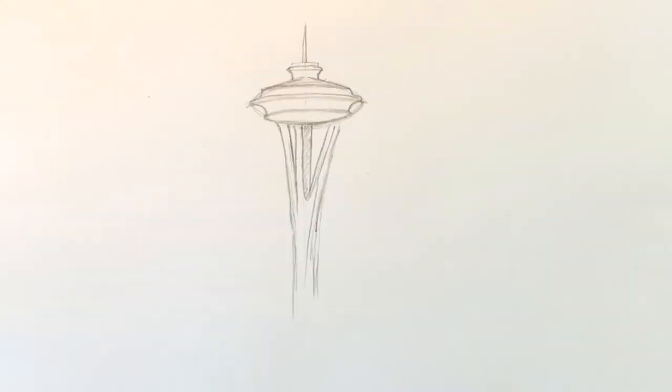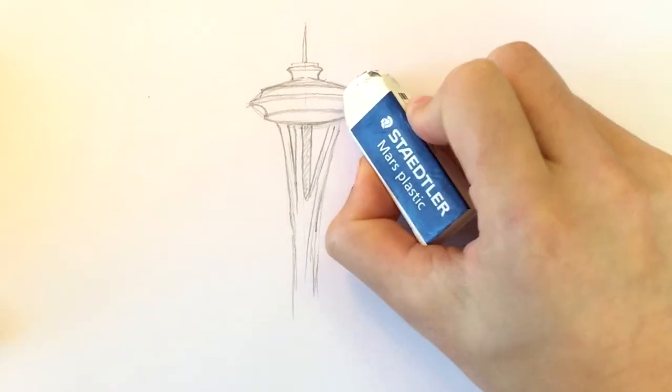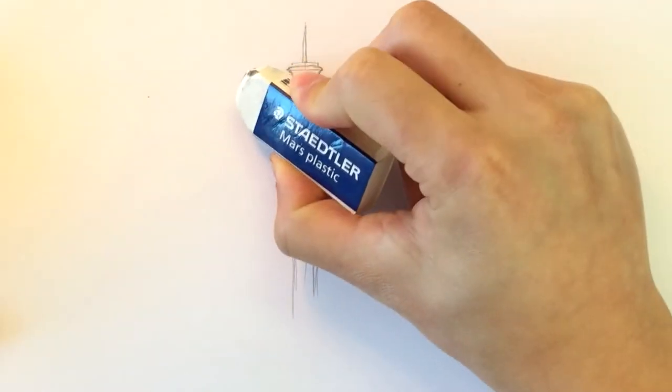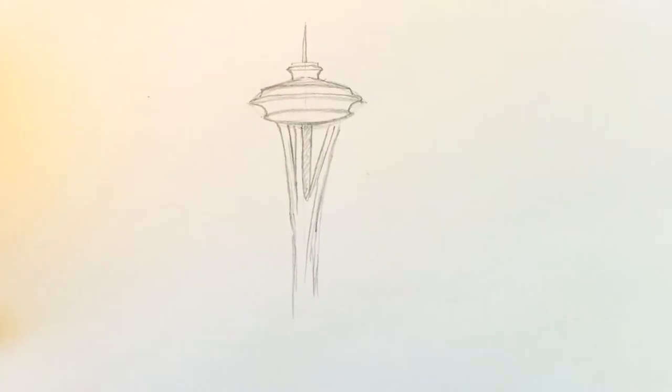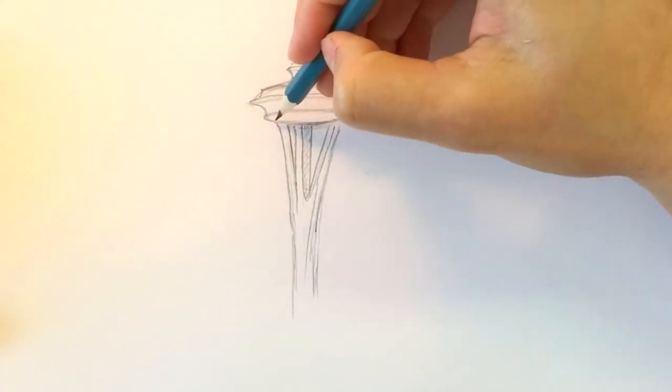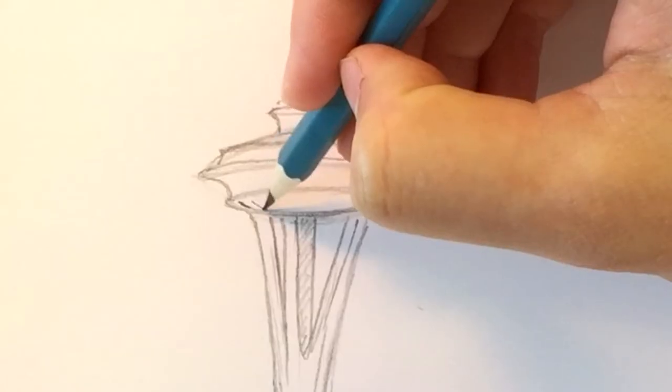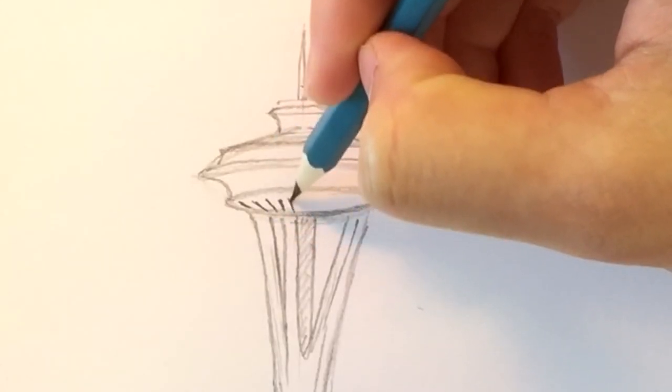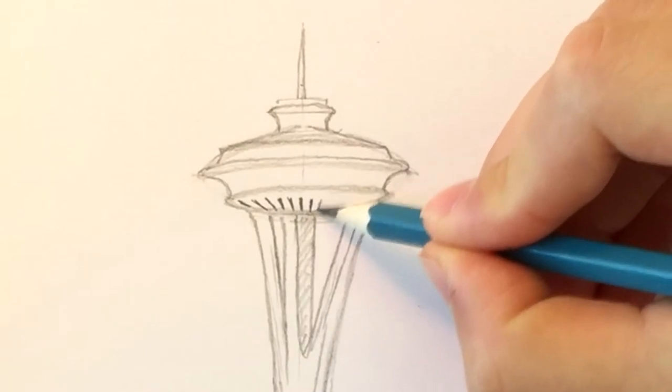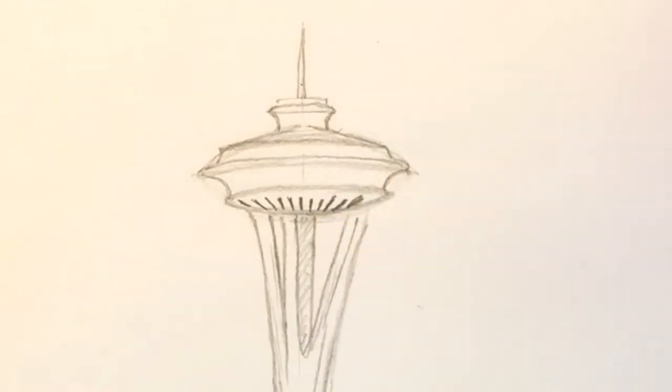Now that we have the basic outline, let's erase those little marks and add some details to our Space Needle. First, those lines that go all around the bottom of the building. And we will color that middle part of the building, which is actually where the restaurant is.